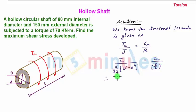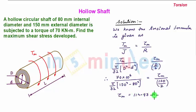Substituting: (70 × 10^6)/[(π/32)(150^4 - 80^4)] = τm/(150/2). From this we get τm = 114.93 N/mm².